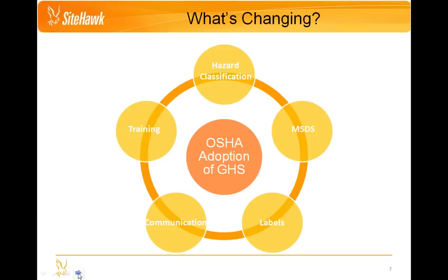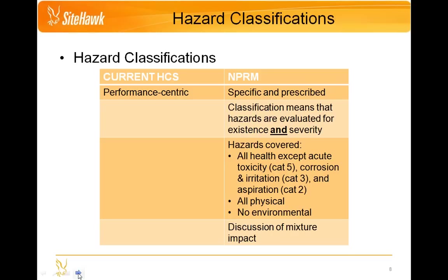Starting with hazard classifications: currently under the hazard communication standard, hazard classifications are performance-oriented, meaning hazards are evaluated on fairly vague and broad criteria. Under the new proposed rule, specific detailed criteria are provided to guide the evaluation and classification of chemicals. Classification will now mean that hazards are evaluated not only for existence but also for severity. OSHA is planning on adopting all GHS health hazards except for acute toxicity category 5, corrosion/irritation category 3, and aspiration hazards category 2. They have also stated they'll be adopting all physical hazard classes and categories. OSHA will not be adopting environmental hazards, as those are currently under EPA's jurisdiction.